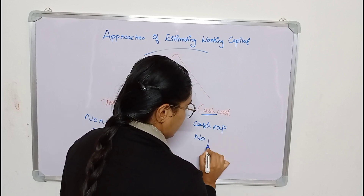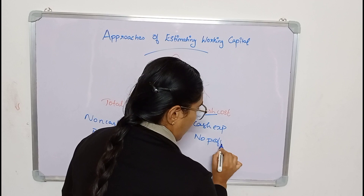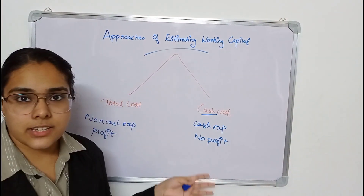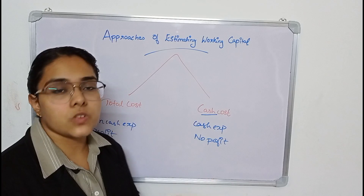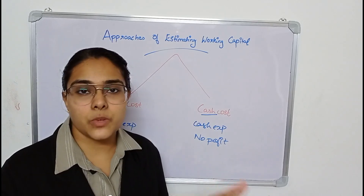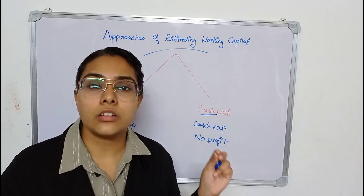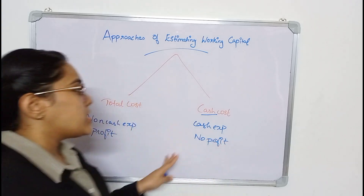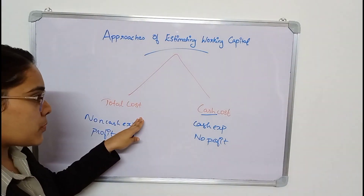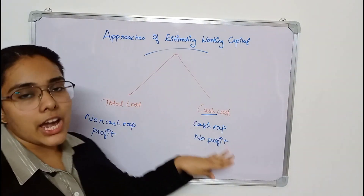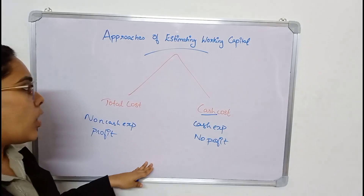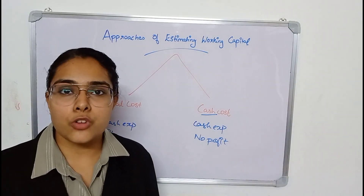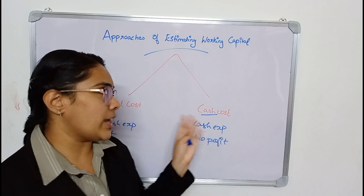In the cash cost approach, we only consider cash expenses. There is no profit considered. All calculations are done on a total cost basis. This is the major difference between the total cost approach and the cash cost approach. You will get a clear understanding when we move on to the problem.